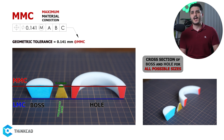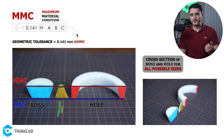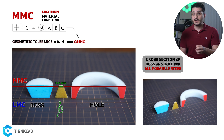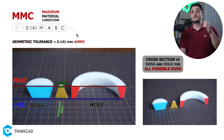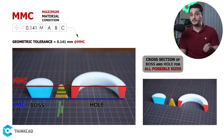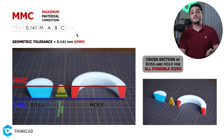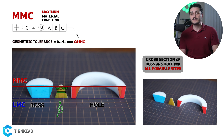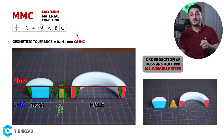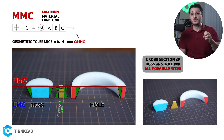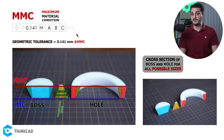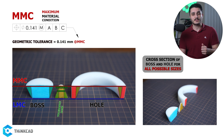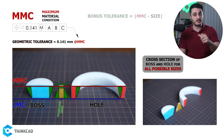This basically means our geometric tolerance of 0.141 mm happens when our feature is at MMC, or maximum material condition. So what happens when we depart from MMC? As we depart from MMC and move towards LMC, we gain additional geometric tolerance exactly the same amount that we have departed from MMC. This additional geometric tolerance is called bonus tolerance.